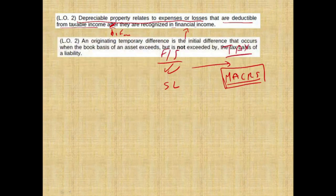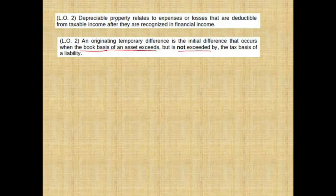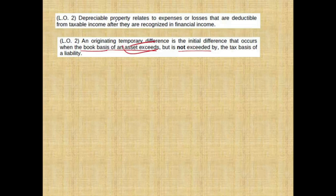The second statement: an originating temporary difference is the initial difference that occurs when the book basis of an asset exceeds but not exceeded by the tax basis of a liability. The temporary difference is initiated when there is either a difference between the book basis of an asset exceeds or is exceeded by, or the book basis and the tax basis of a liability exceeds or is exceeded by. So it doesn't have to be only an asset exceeded by the tax basis of a liability — the difference could exist for both assets and liabilities. This statement is false.